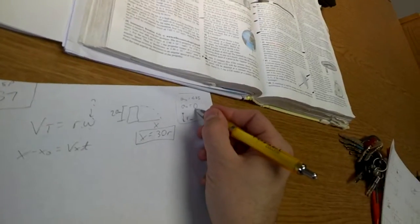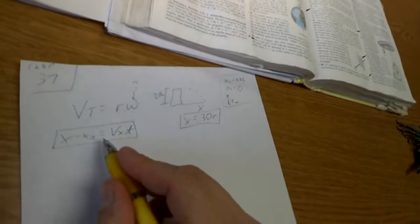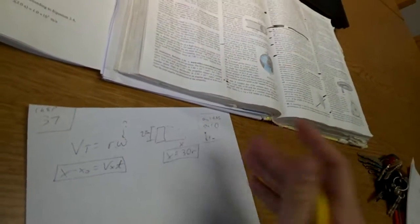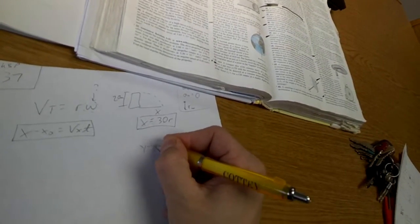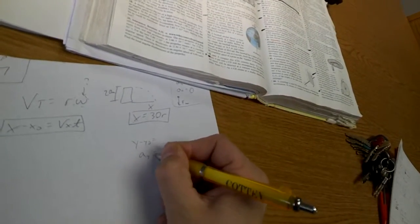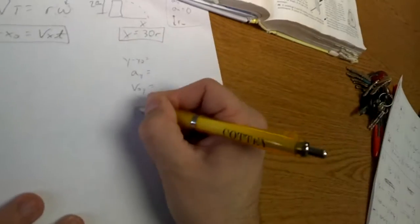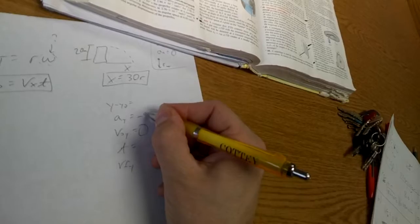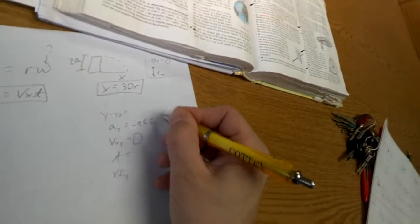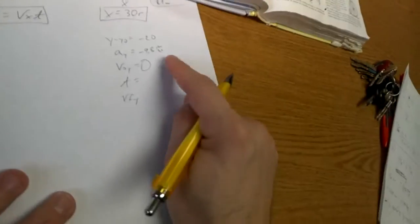Well, in the x direction there's no acceleration, so we get to use this: x equals vt. Now there's a problem, we don't have time, so we're going to have to get some expression for time. So I'm going to list my five variables and see what we can deal with here. v initial in the y is zero, acceleration is negative 9.8, displacement is negative 20. Hey, we're in luck, we can use an equation here because we don't care about v final.